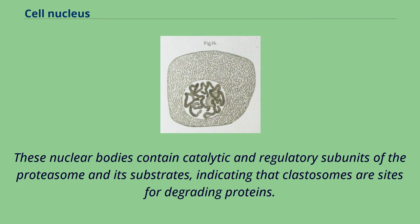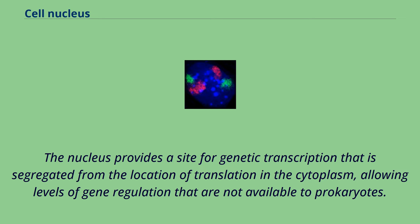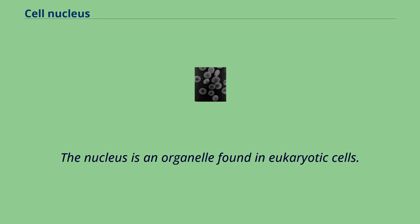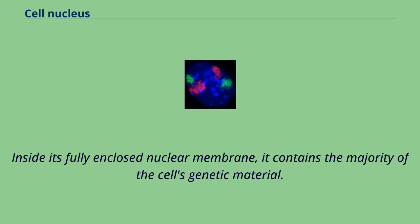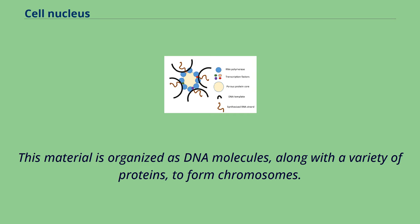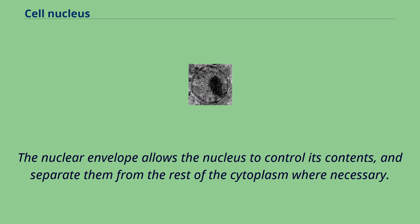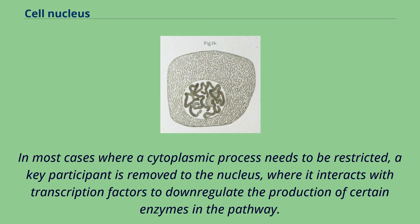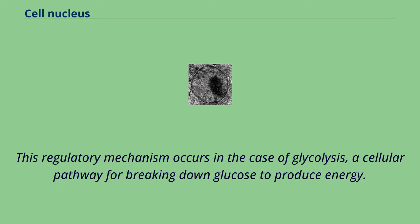The nucleus provides a site for genetic transcription that is segregated from the location of translation in the cytoplasm, allowing levels of gene regulation that are not available to prokaryotes. The main function of the cell nucleus is to control gene expression and mediate the replication of DNA during the cell cycle. The nuclear envelope allows the nucleus to control its contents and separate them from the rest of the cytoplasm where necessary. In most cases where a cytoplasmic process needs to be restricted, a key participant is removed to the nucleus, where it interacts with transcription factors to down-regulate the production of certain enzymes in the pathway. This regulatory mechanism occurs in the case of glycolysis, a cellular pathway for breaking down glucose to produce energy.